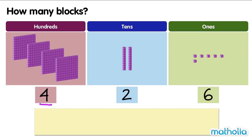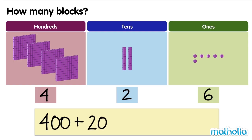The digit in the hundreds place has a value of 400. The digit in the tens place has a value of 20. And the digit in the ones place has a value of 6. 400 plus 20 plus 6 equals 426. There are 426 blocks.